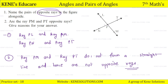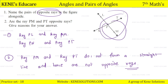So two rays which have a common origin and form a straight line — this is very important — they must form a straight line to be said to be opposite rays. Therefore PT and PM cannot be opposite rays because they do not form a straight line. So I think you have the answer to both questions.